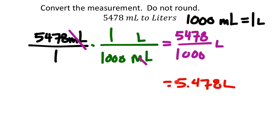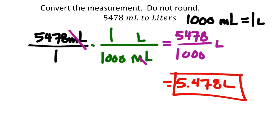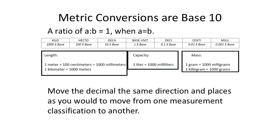Notice that 5,478 kind of repeats — we started with 5,478 and ended with 5.478. All that changed was where the decimal was. That's because we divided by a base-10 value like 1,000. When dividing by a power of 10, all you're doing is moving the decimal. The question is: which direction do we move it?